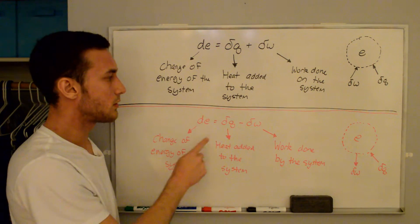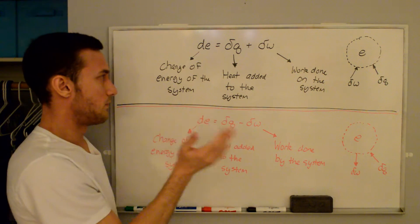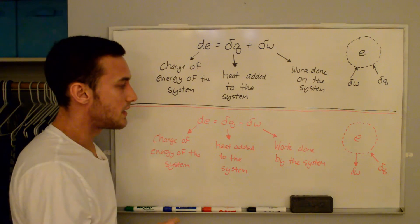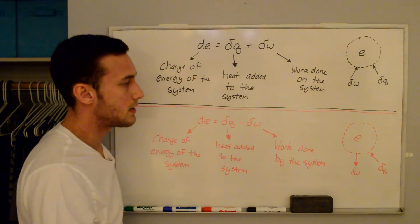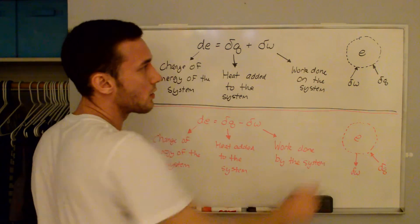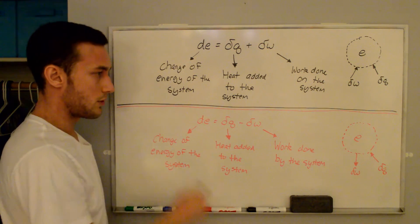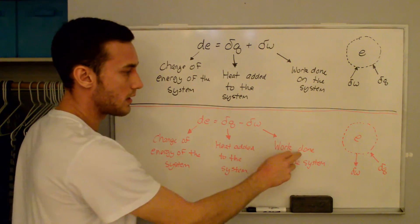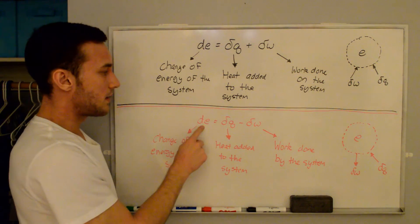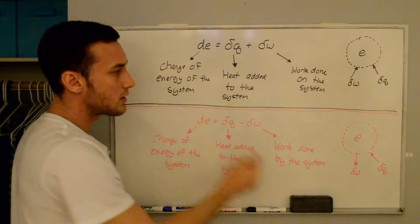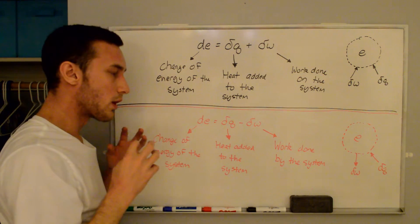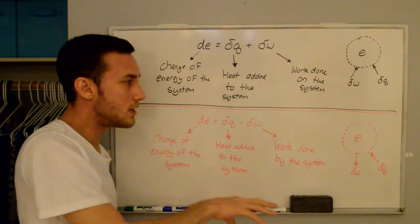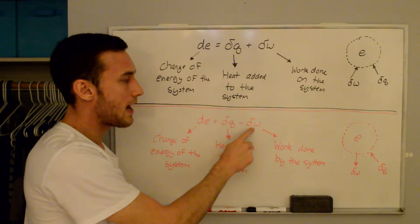The second form is very similar except for a minus sign: dE equals δQ minus δW. dE is still the change in energy of the system and δQ is still the heat added to the system, but now δW is defined as the work done by the system on the surroundings. You would anticipate the energy increases with added heat, but if the system is doing work on the surroundings, the energy decreases because it's transferring energy to the surroundings — which is why there's a minus sign.